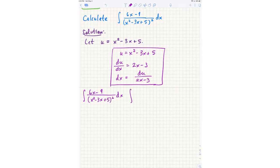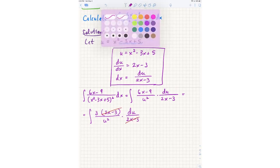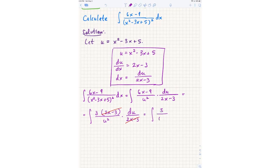Okay, so the 6x minus 9, I don't know what to do with quite yet. The denominator is u squared, and the dx is du over 2x minus 3. Okay, so the top, I can obviously factor as 3 times 2x minus 3. And that cancels out. So I get an antiderivative of 3 over u squared. Okay, so now where do I go from here?